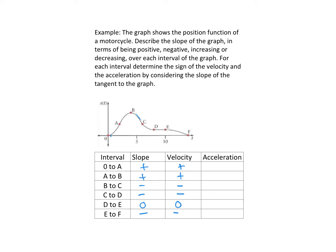Now we want to look at acceleration. For acceleration, we're looking at whether the slope of the tangent line in each segment is getting steeper or less steep. If I go from 0 to A and draw some tangent lines, that tangent line would be getting steeper as I go from 0 to A. When I look at A to B the tangent line would be getting less steep, so that means the acceleration is negative.